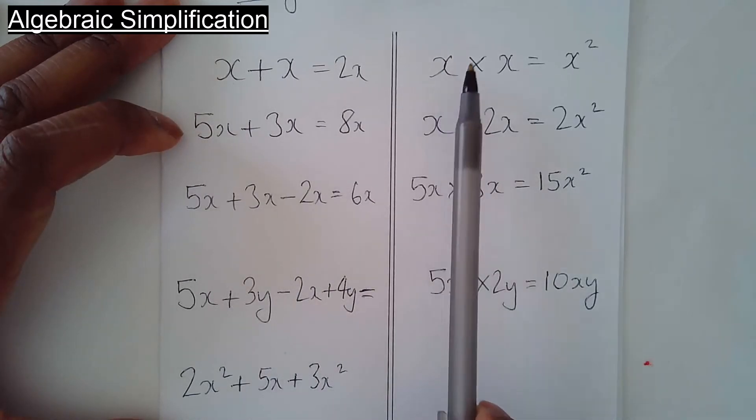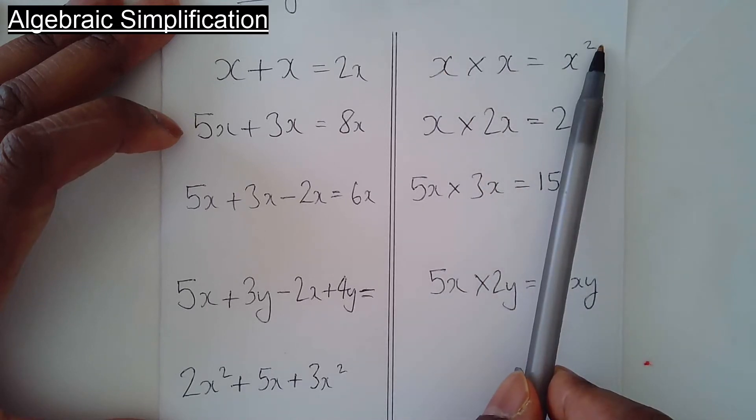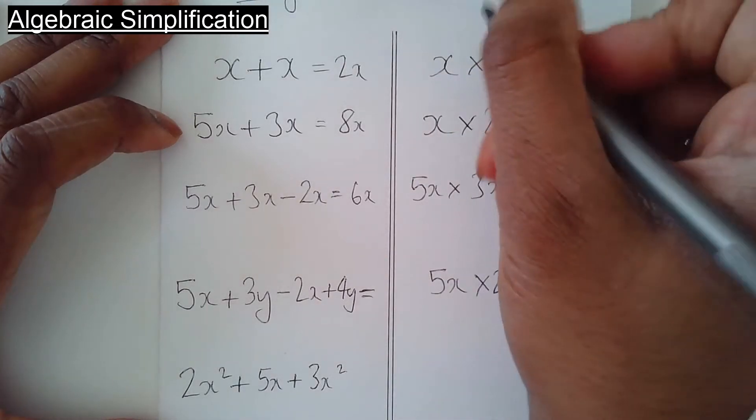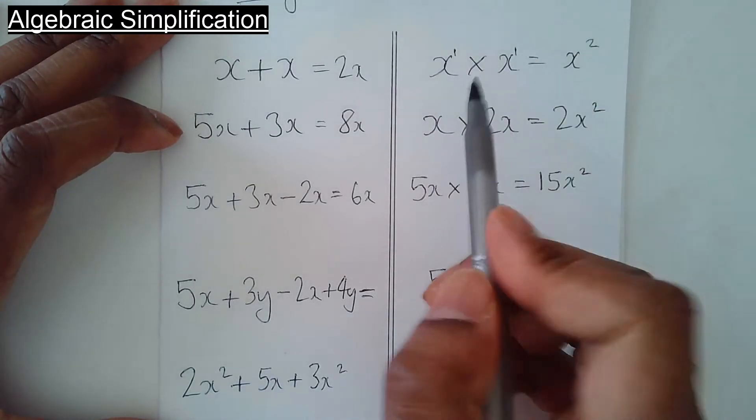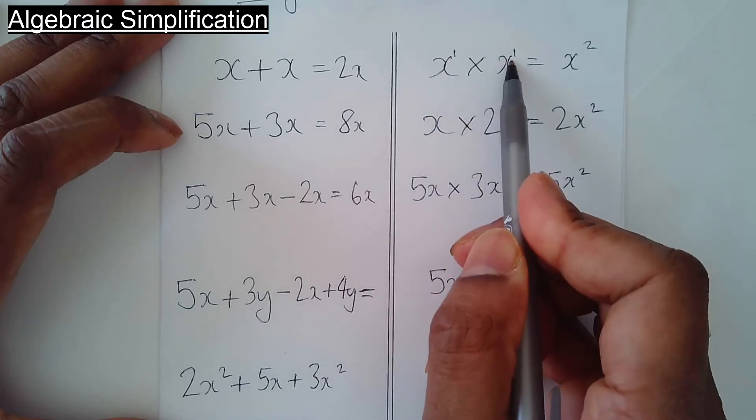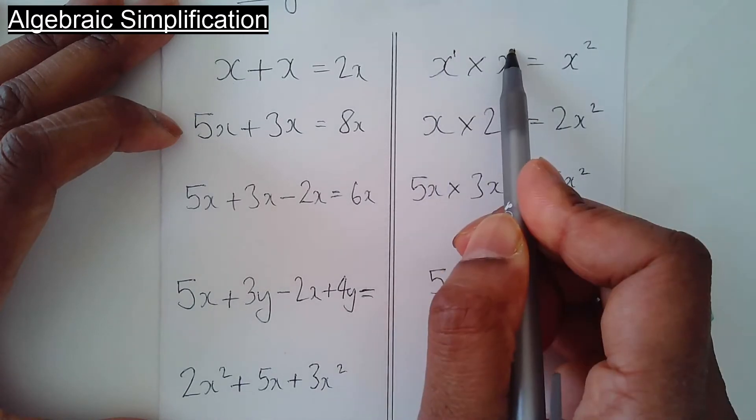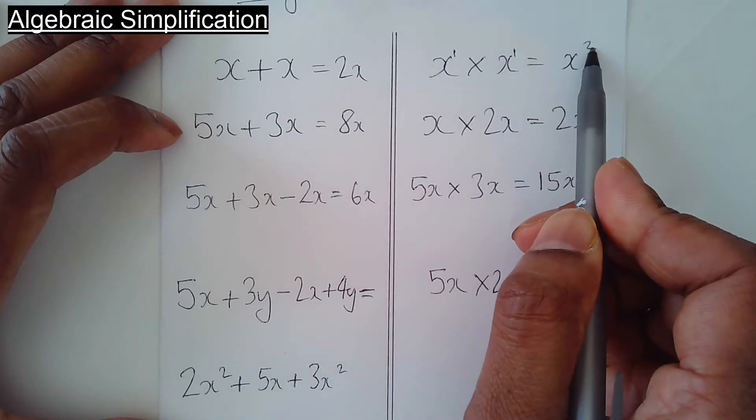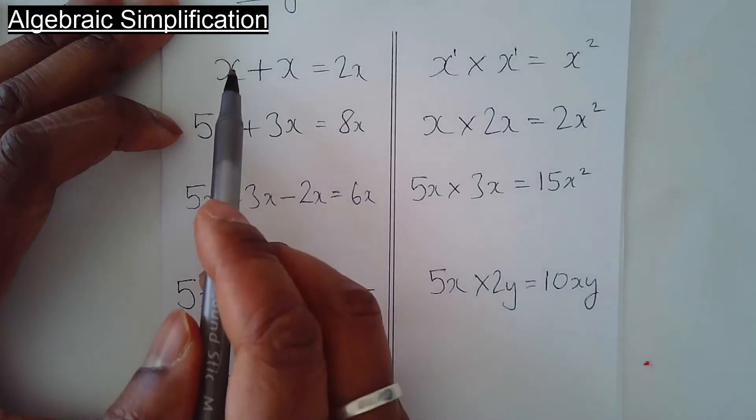But look on this side, x times x is x squared. If you remember, x is the same as x to the power of 1. Whenever the base is the same and you're timesing, what you're doing with the indices, you add. That's why it becomes 2. So x times x is x squared, whereas x plus x is 2x. Do not confuse these two things.